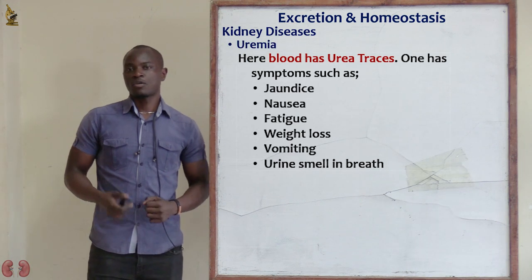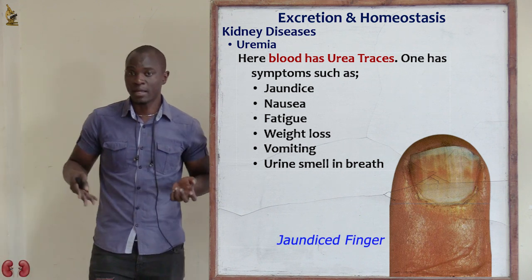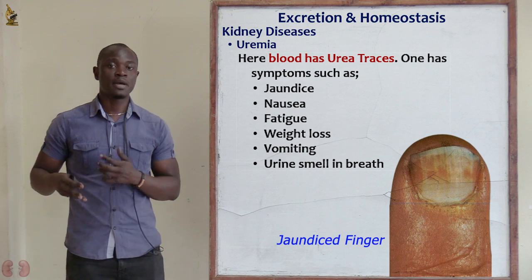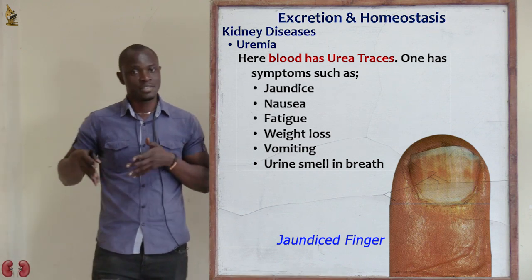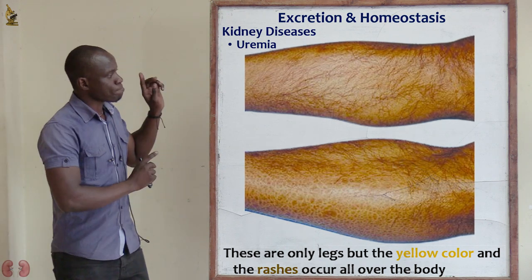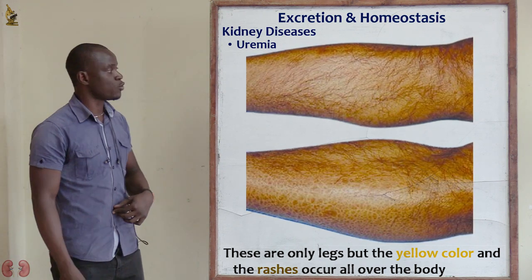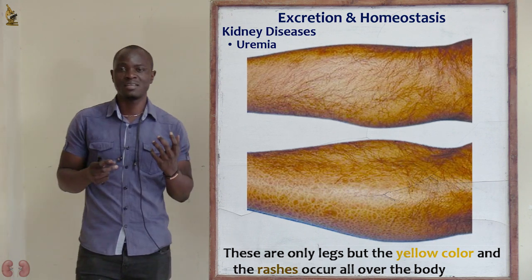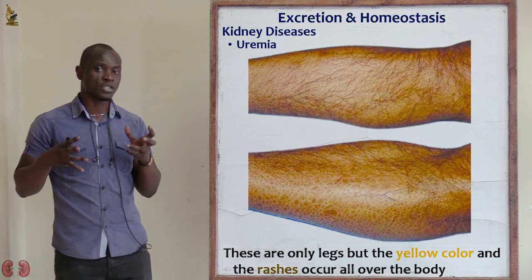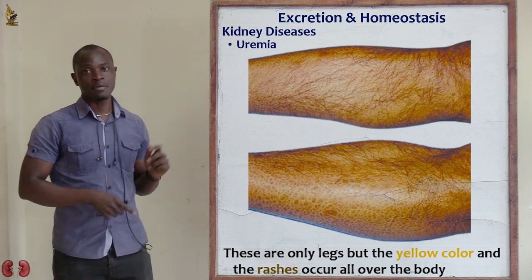Uremia is a condition whereby there is some concentration and traces of urine in the blood. As you can see, this is a patient who has that condition referred to as uremia. You can see the skin seems yellowish and somewhat has some rashes.